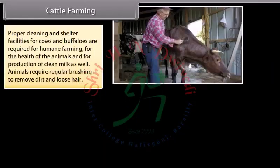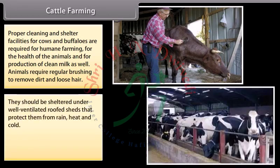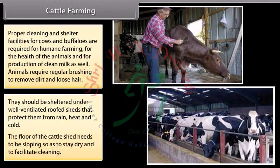Proper cleaning and shelter facilities for cows and buffaloes are required for humane farming, for the health of the animals, and for production of clean milk. Animals require regular brushing to remove dirt and loose hair. They should be sheltered under well-ventilated roofed sheds that protect them from rain, heat and cold. The floor of the cattle shed needs to be sloping so as to stay dry and facilitate cleaning.